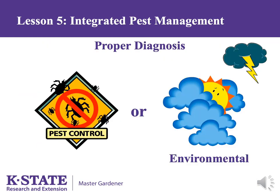As mentioned at the beginning of this module, most plant problems in Kansas are due to environmental stress rather than pests such as insects and disease. Environmental stresses include, but are not limited to, heat, cold, drought, high wind, ice storms, and lightning strikes. These stresses can weaken a plant and make it more susceptible to insect and disease attack. One of the most important ways to avoid plant problems is to choose plant species adapted to tough Kansas conditions.